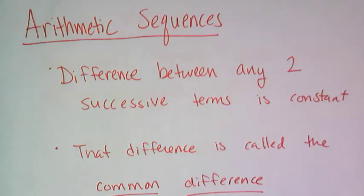Now, there are two primary types of sequences we deal with in Algebra 1. One is the arithmetic sequence, and what makes a sequence arithmetic is that the difference between any two successive terms is constant.